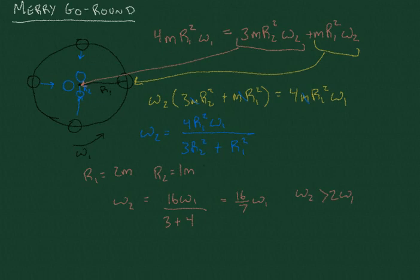But it could have been even faster, right? Let's say we took the same merry-go-round, and let's say all three children were able to move right to the center, and their moments of inertia is basically negligible. So if we let R2 go to zero, then we would say that Omega-2 would just be 16 Omega-1 over 4, which is 4 Omega-1. So we could actually get this thing going four times as fast as it was originally.